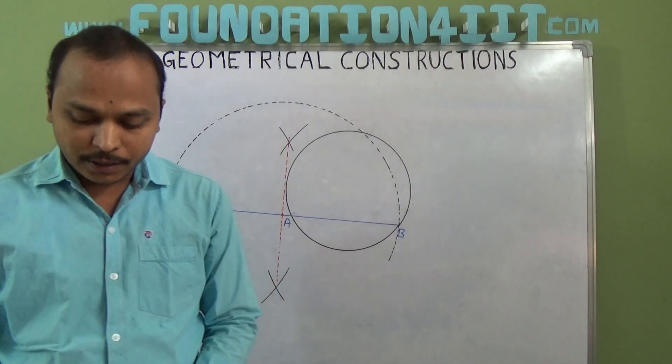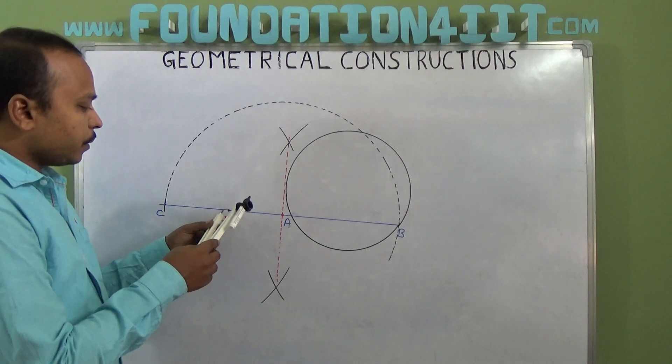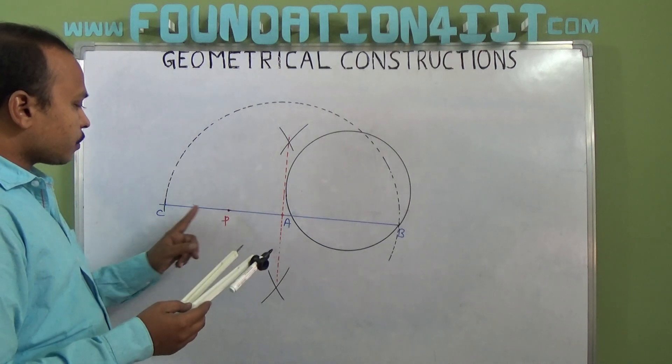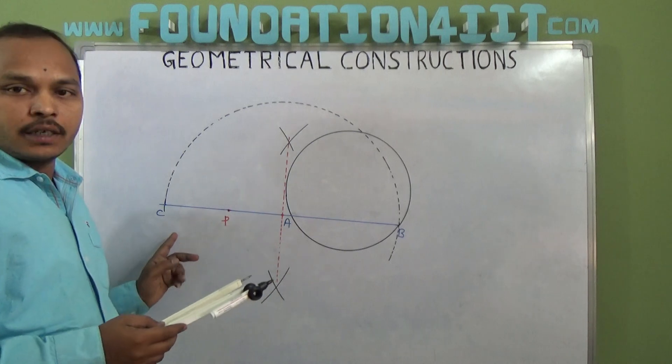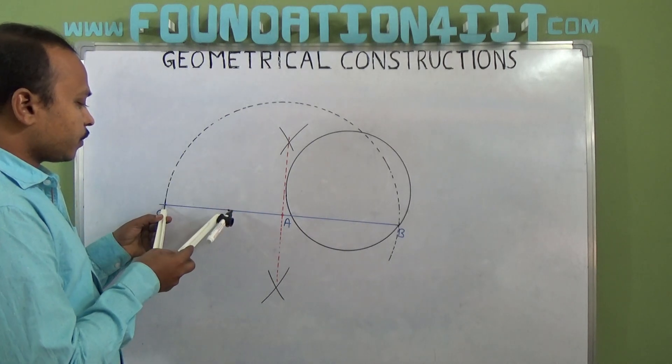At P, next we draw perpendicular bisector, that means at point P, because P is the midpoint of A and C. So just take more than half from C.